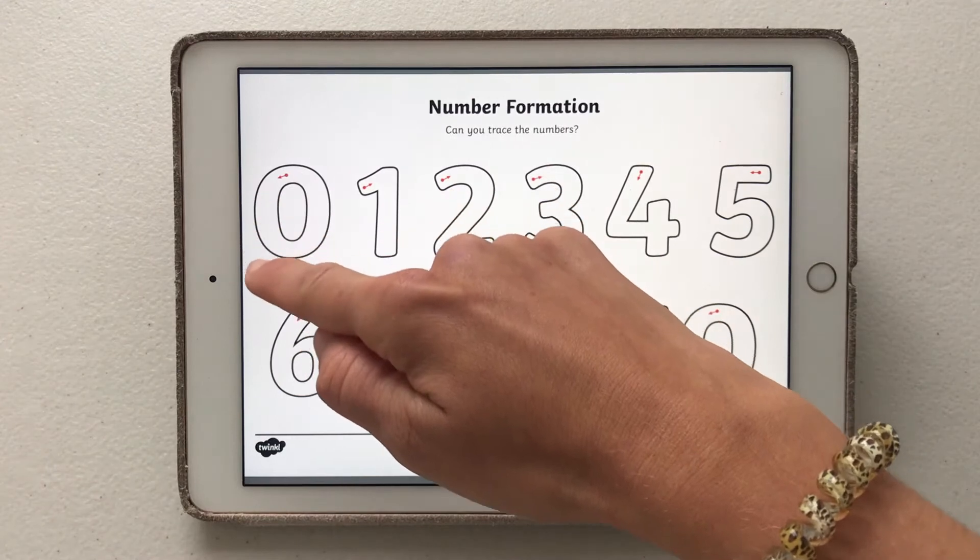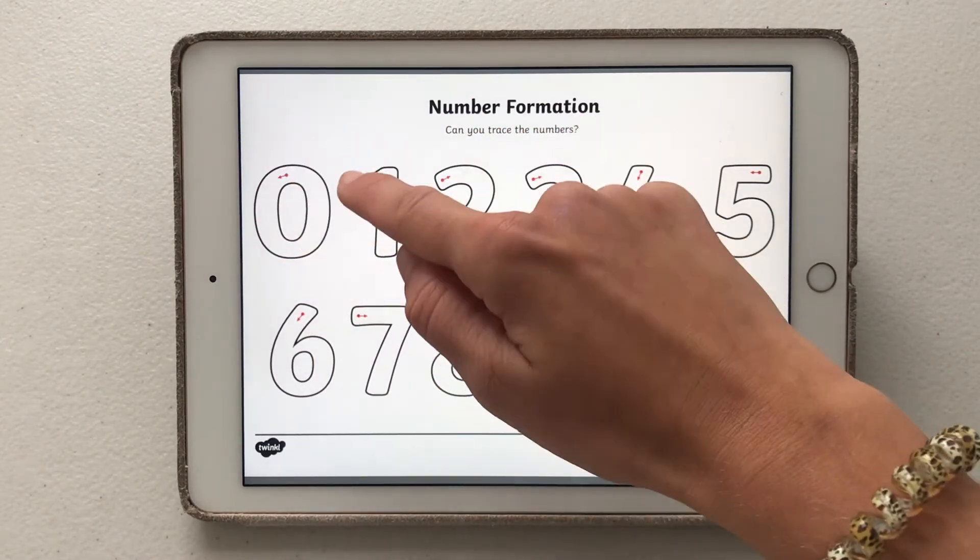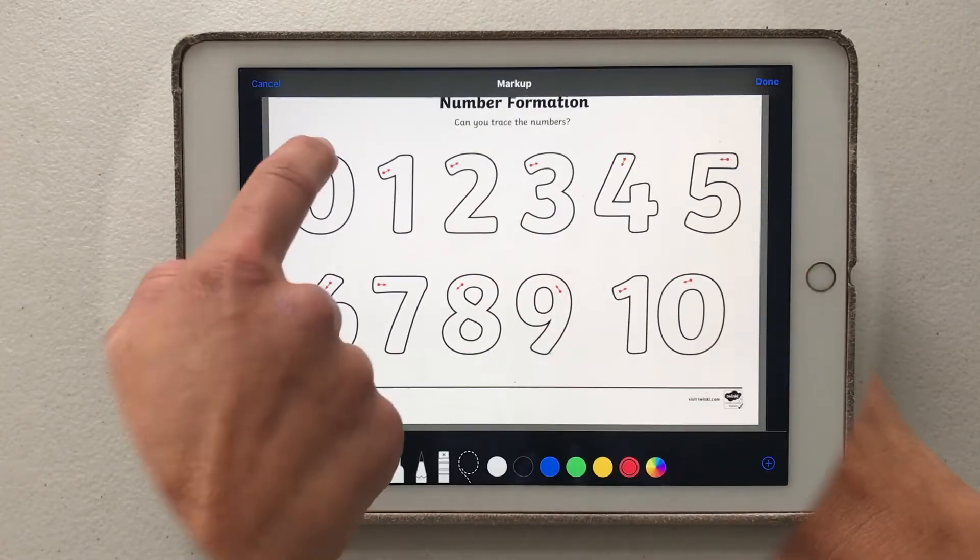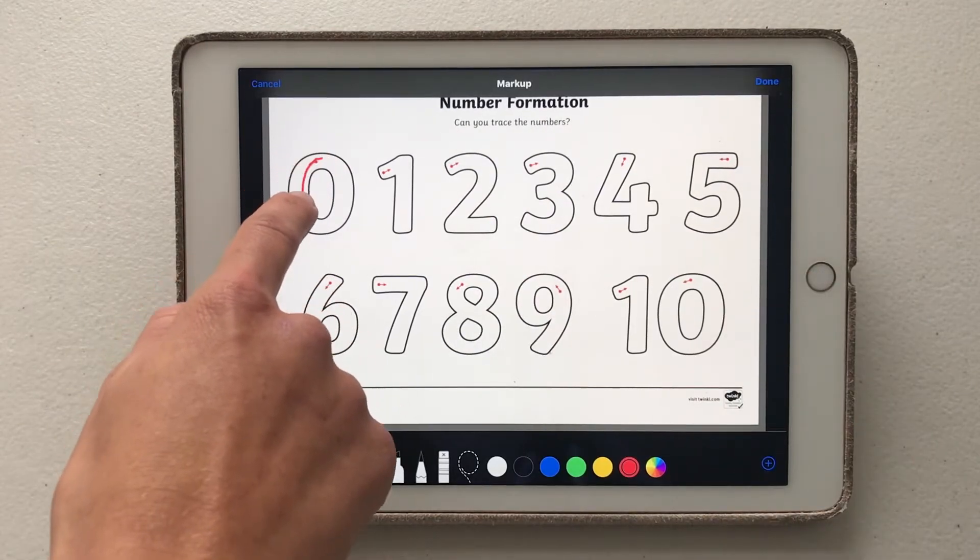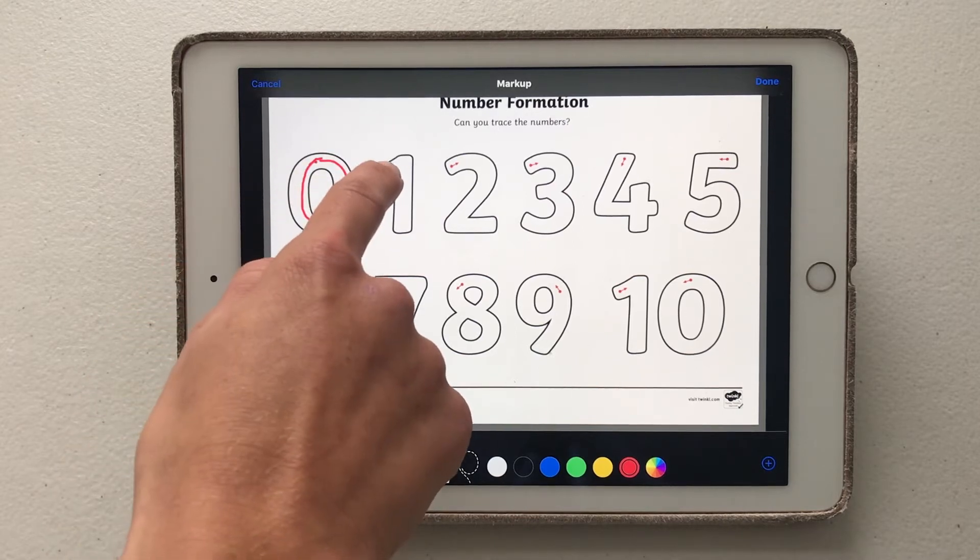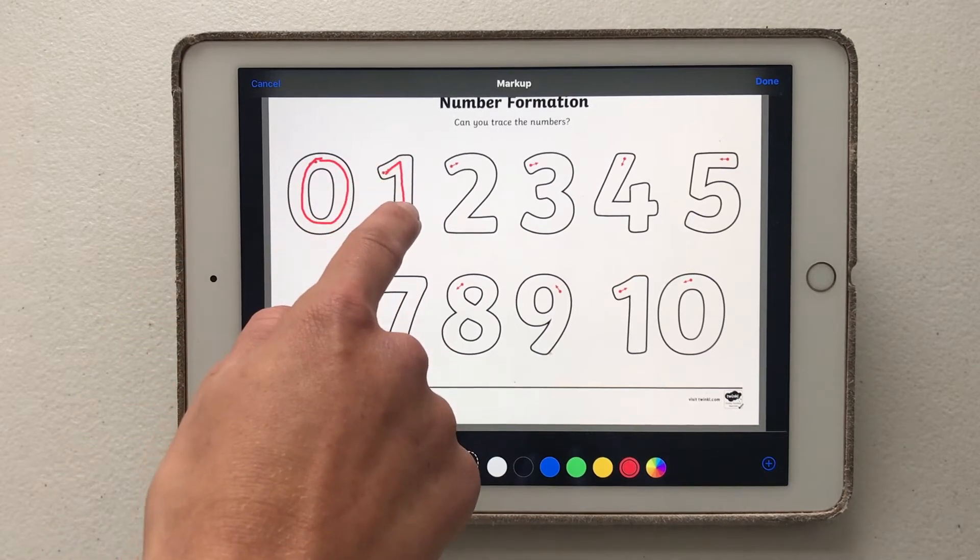One way you could use this resource is beginning by getting the child to trace their finger over the number, then allow the child to explore following the number form with a pen or with an editing tool that can be found on a tablet or computer.